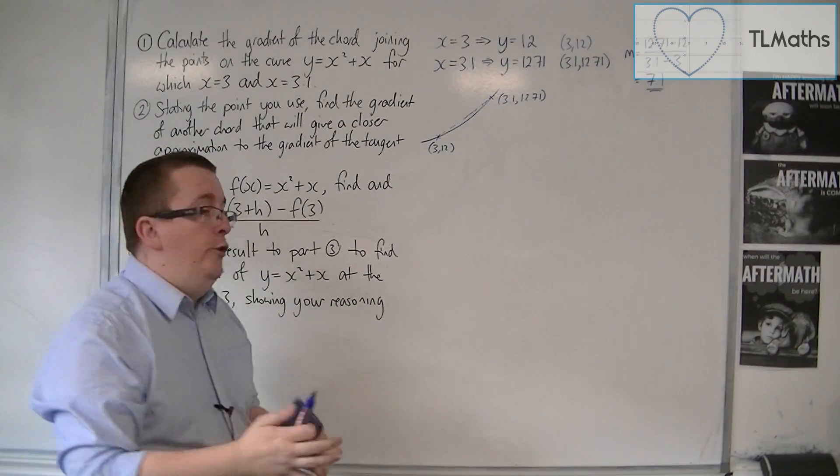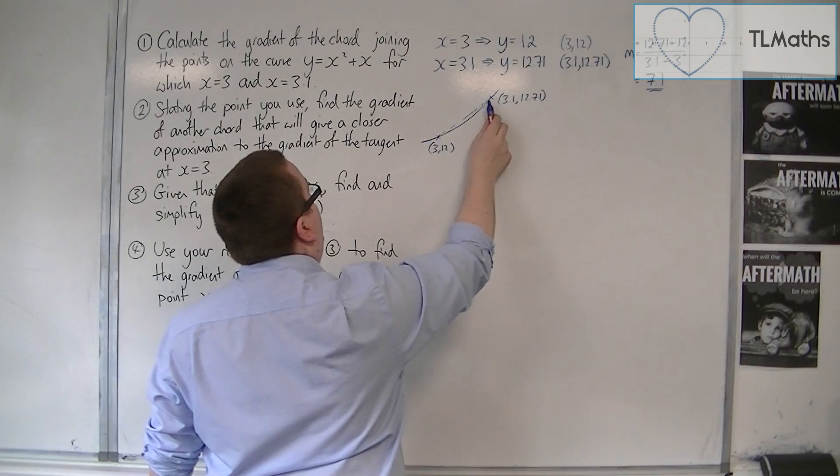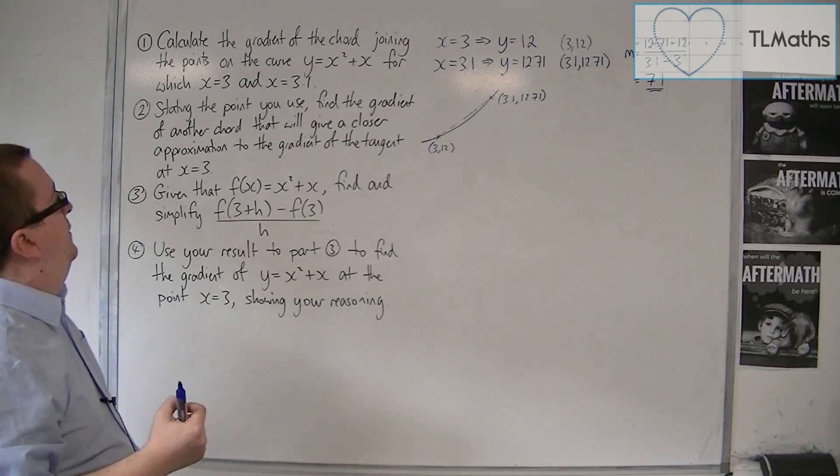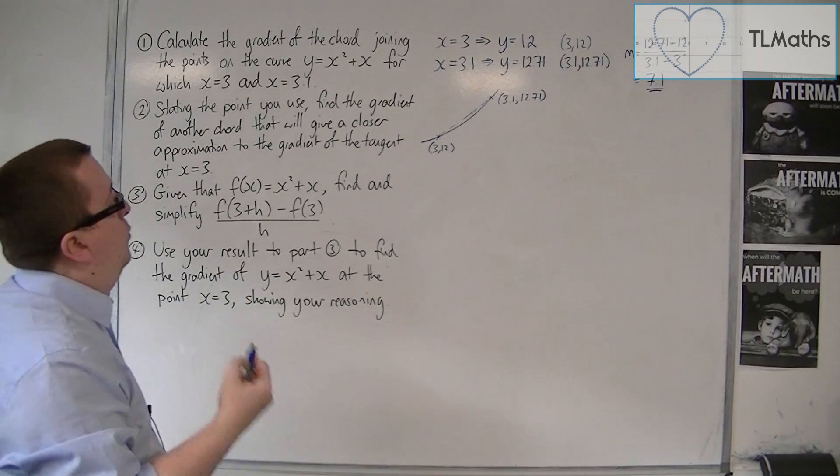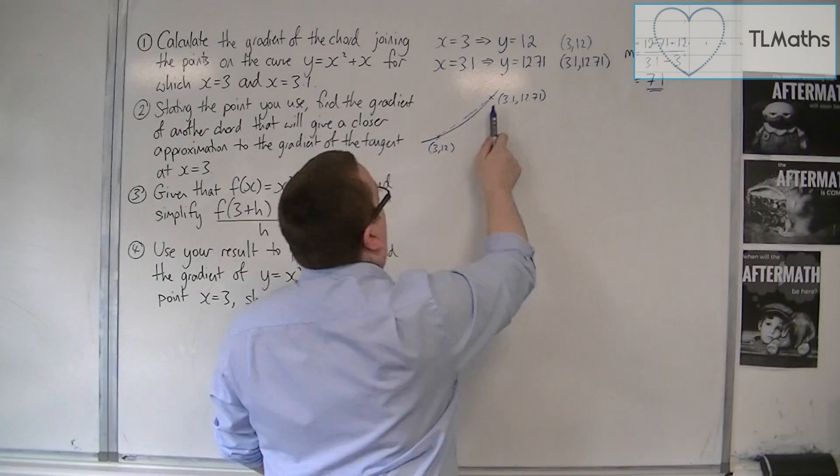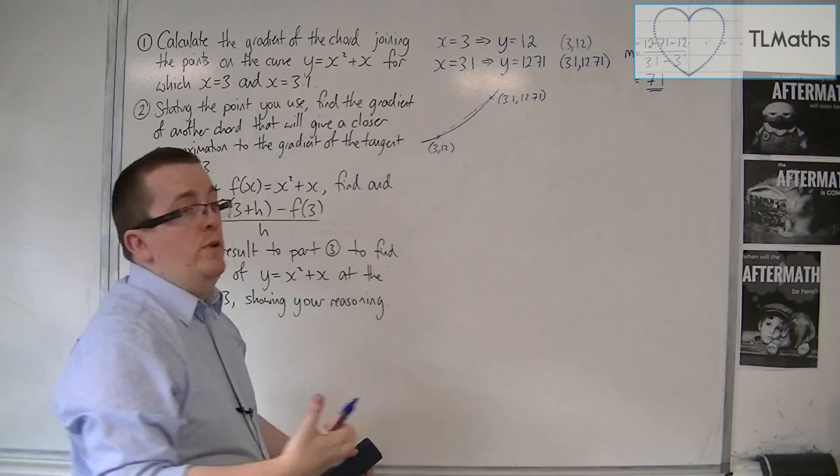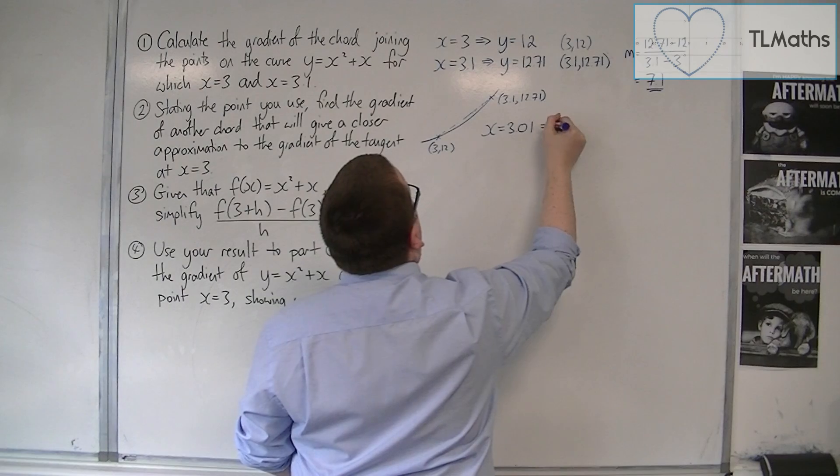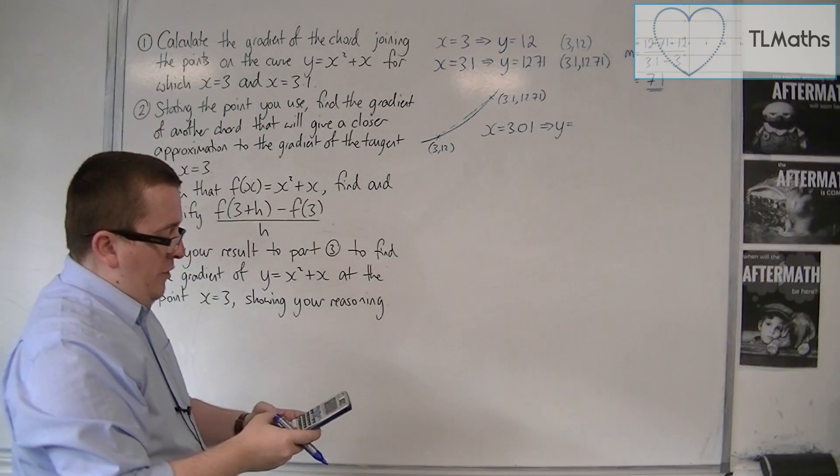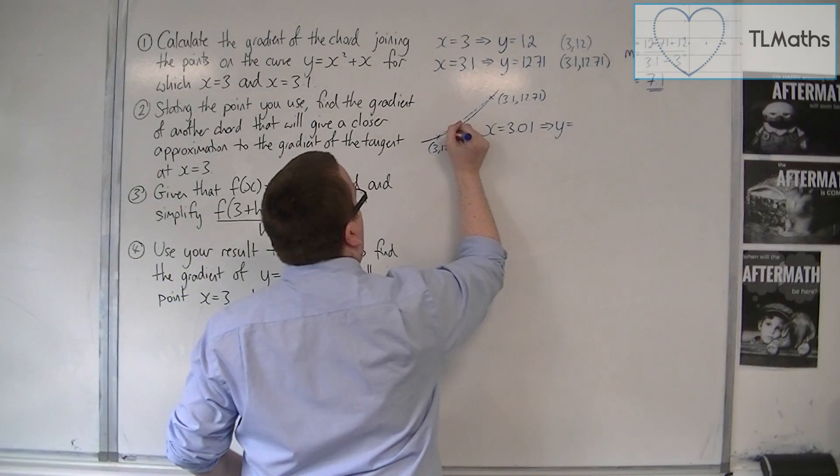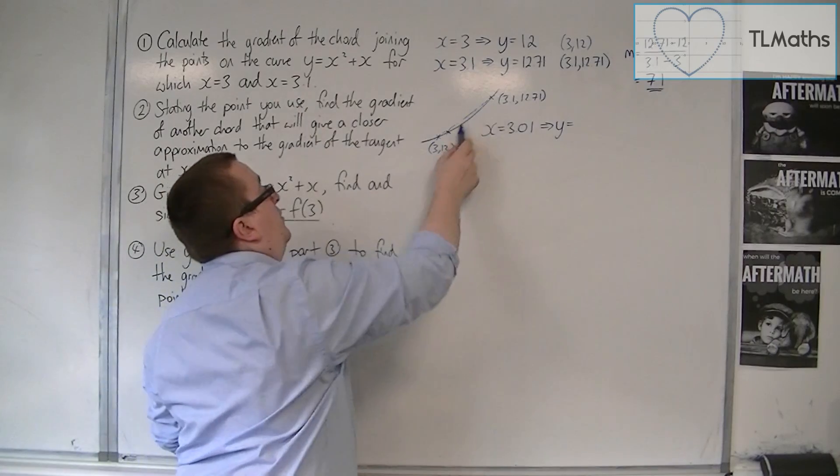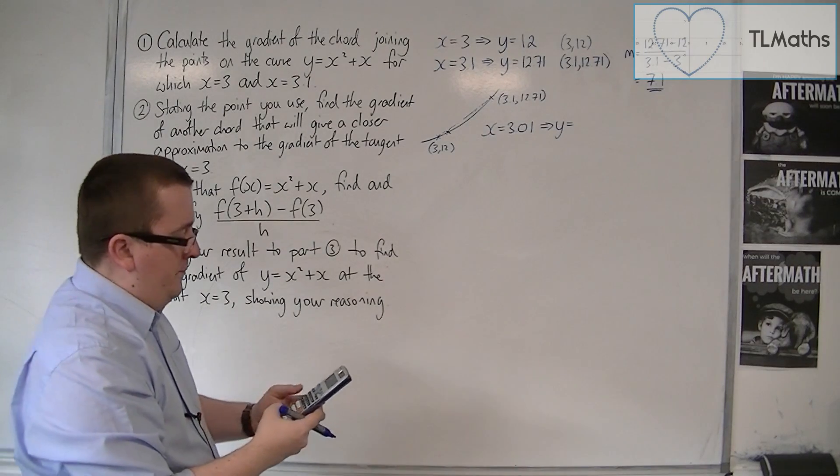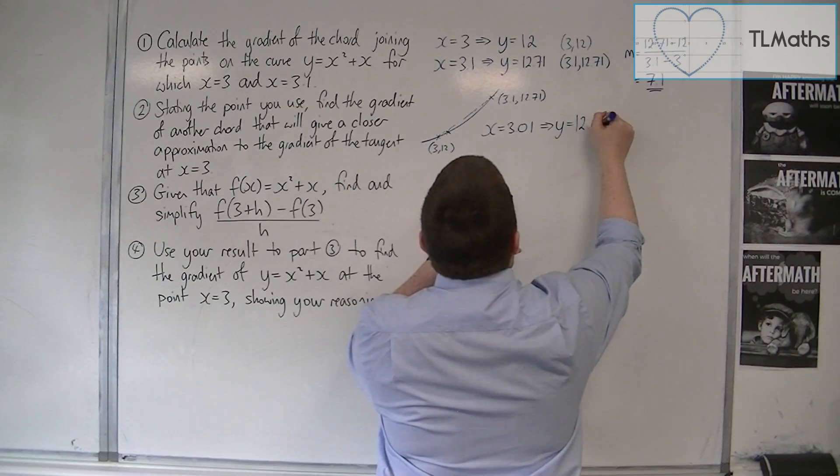So if we want a closer approximation to the gradient of the tangent, we need to choose a point that is closer to 3, 12, that is also on the curve. So we would choose just a value of x that is closer. So we might choose something like 3.01, for example. So x might be 3.01, and so we would find y. So 3.01 squared—so I've chosen this point down here, for example. Just make sure that the point is between and closer to 3, 12. So 3.01 squared plus 3.01, and I get 12.0701.